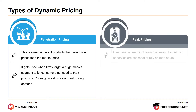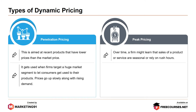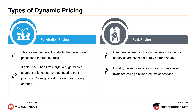Next, peak pricing. Over time, a firm might learn that sales of a product or service are seasonal or only rely on rush hours. Usually, this reduces options for customers as no rivals are selling similar products or services.